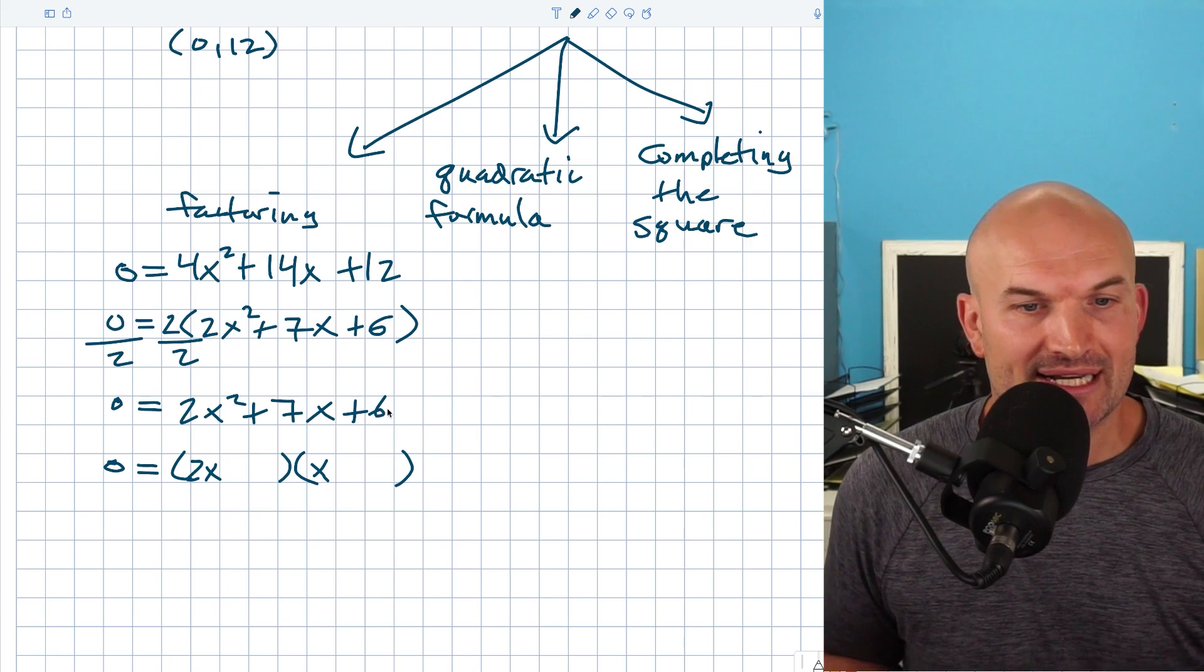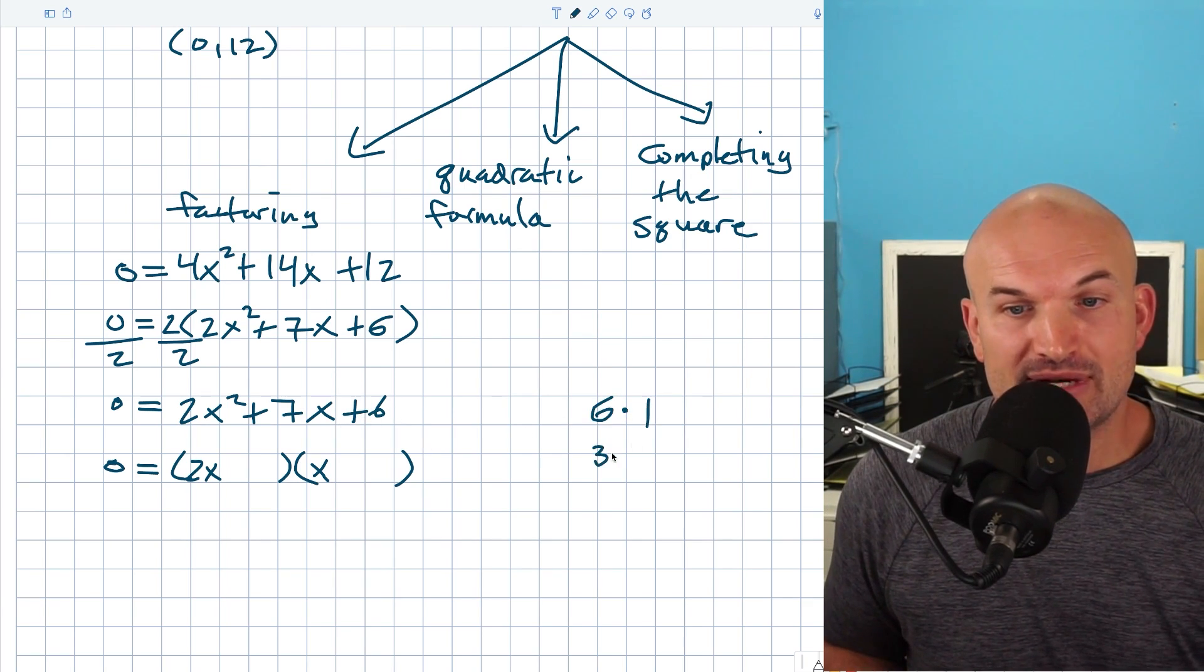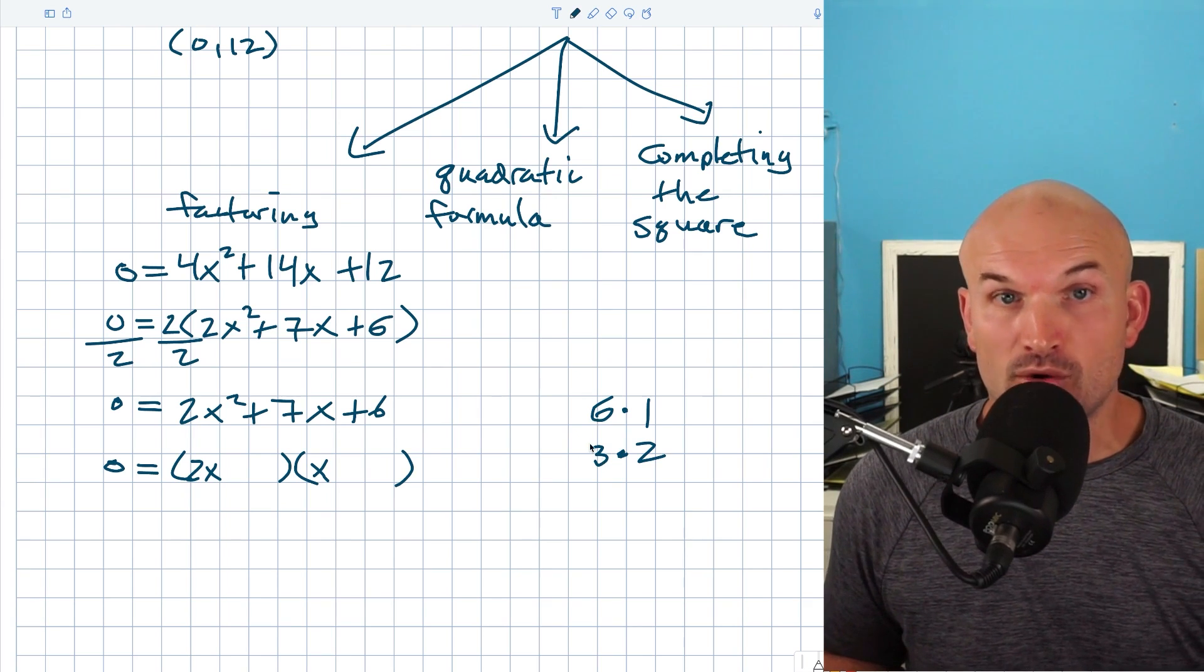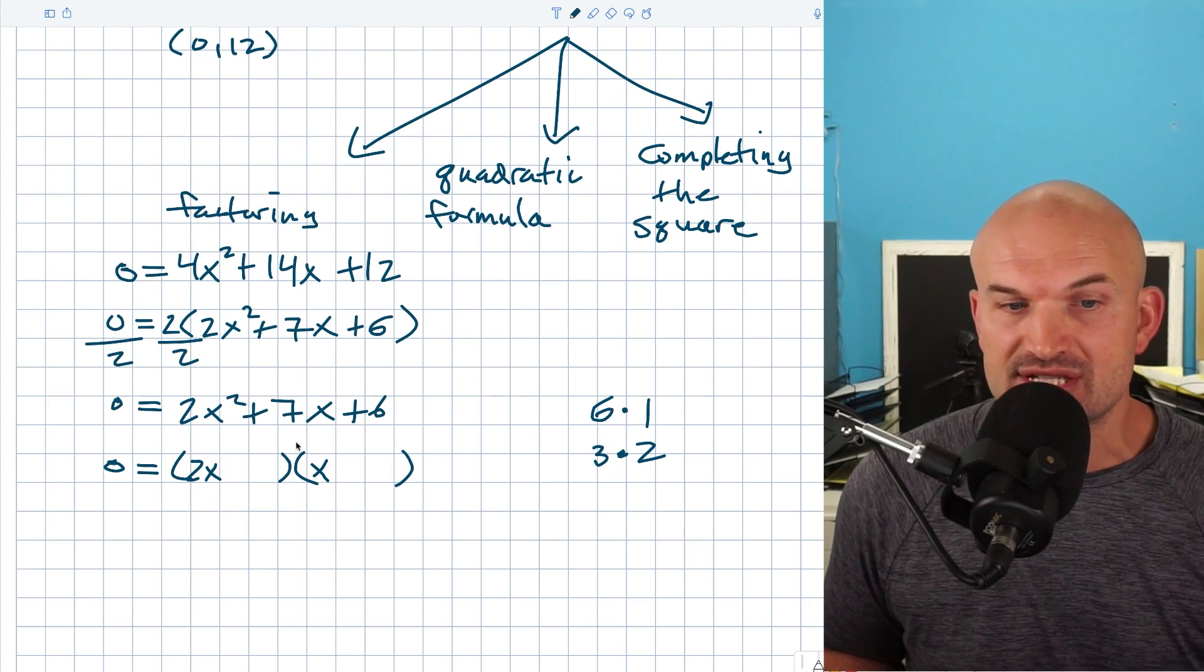Then I want to say, what two numbers are going to multiply to give me six? Now, here we have some options. We have 6 times 1 and we have 3 times 2. The problem is which of these works and which binomial are we going to put them in? And the way to determine that is we want to look at this middle term, which is 7x.